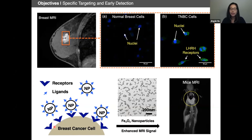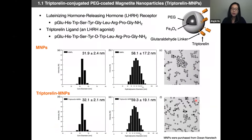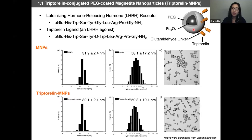Our ultimate goal is to identify and enhance the lesion in whole-body imaging. Here's the structure of our nanoparticle: it has a magnetite core with a polyethylene glycol coating aimed to improve monodispersity and enhance circulation time inside the body. We attach triptorelin, which is an LHRH agonist ligand, on the surface of these nanoparticles for specific targeting. From TEM images, we can see the particles preserved good monodispersity and spherical shape after conjugation, suggesting negligible aggregation occurred during this process.